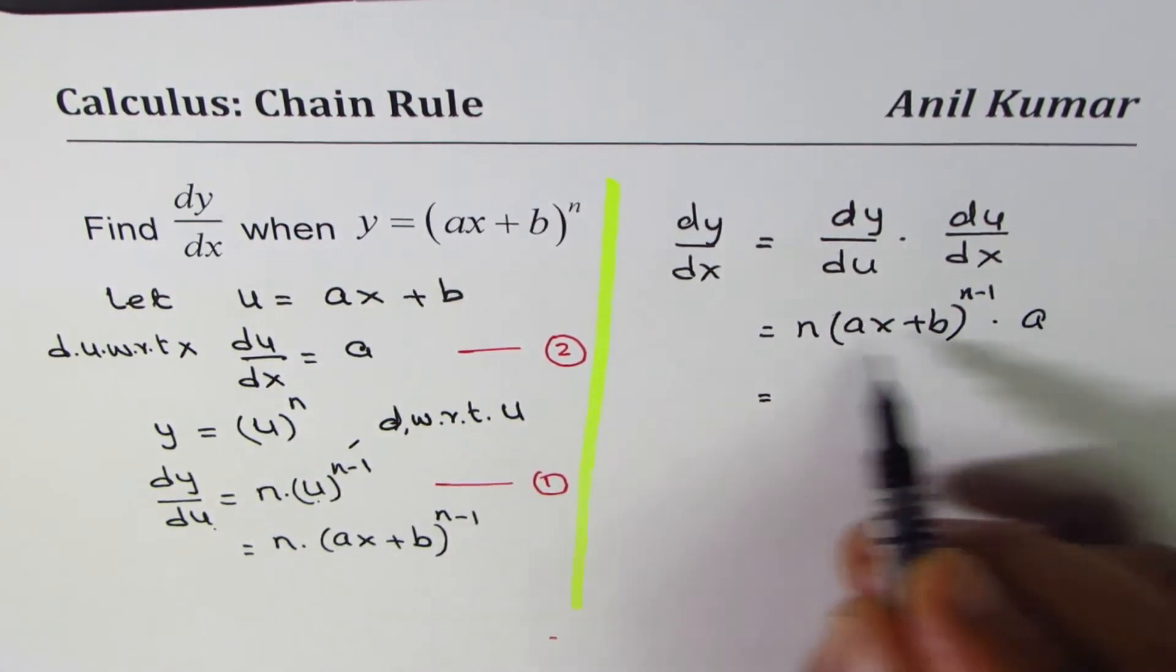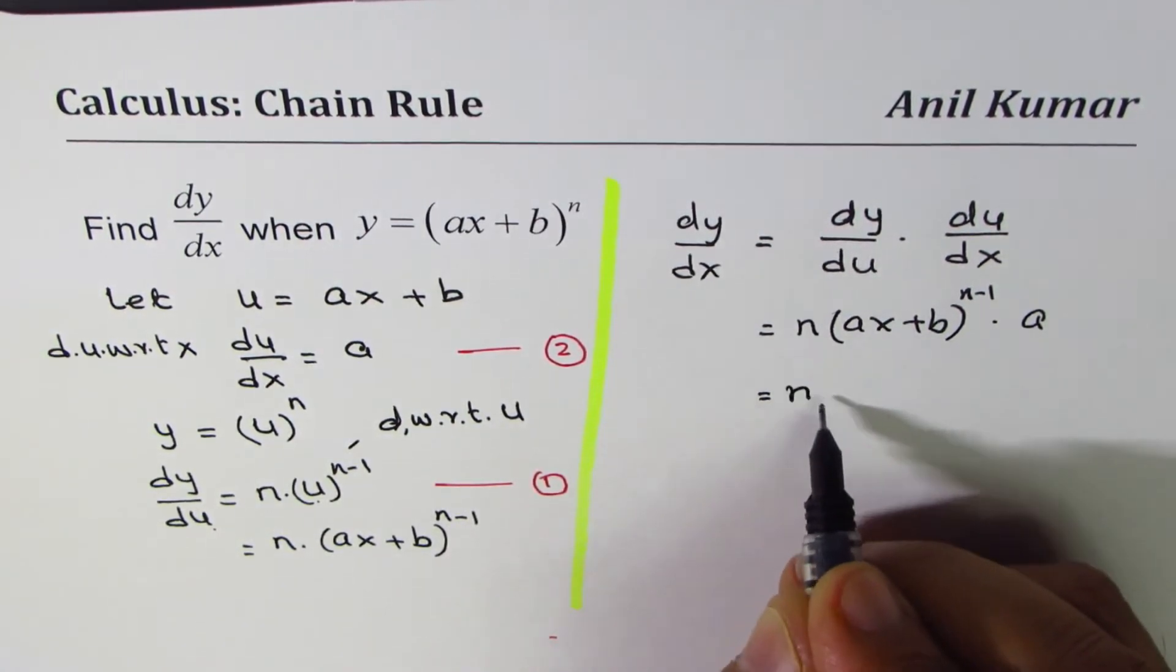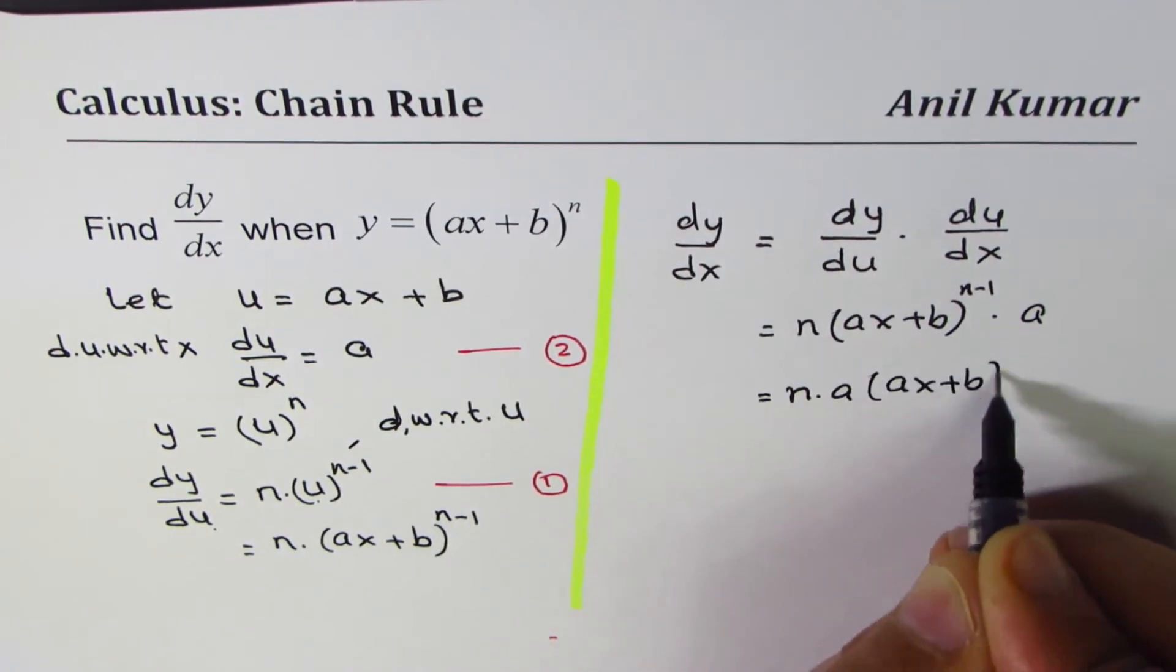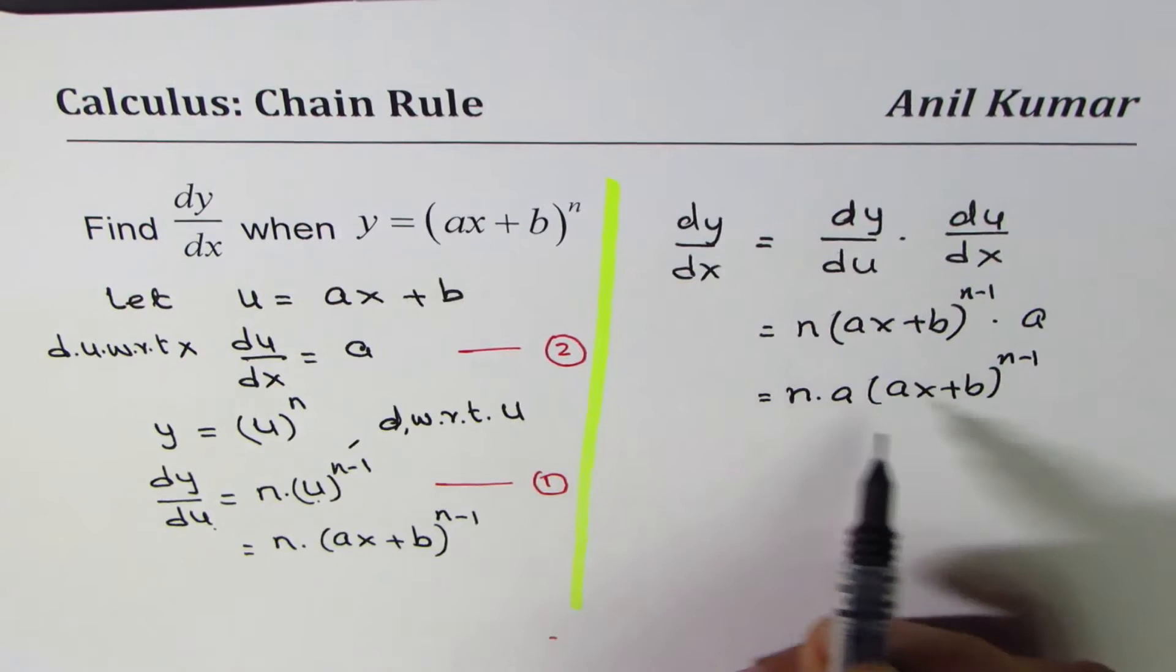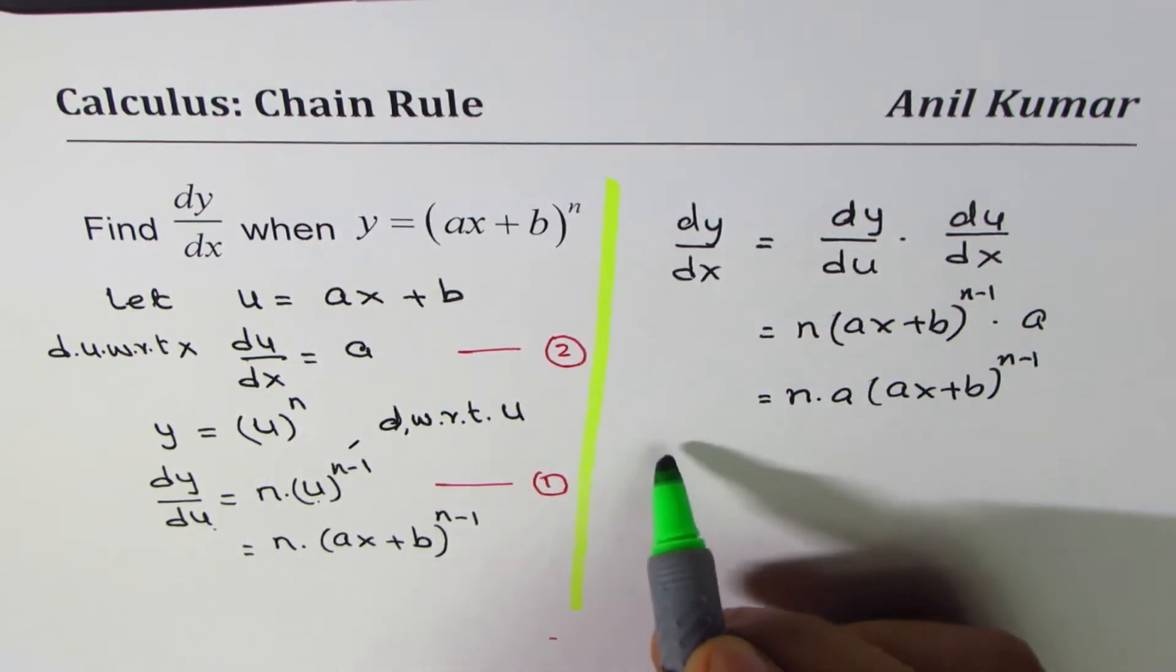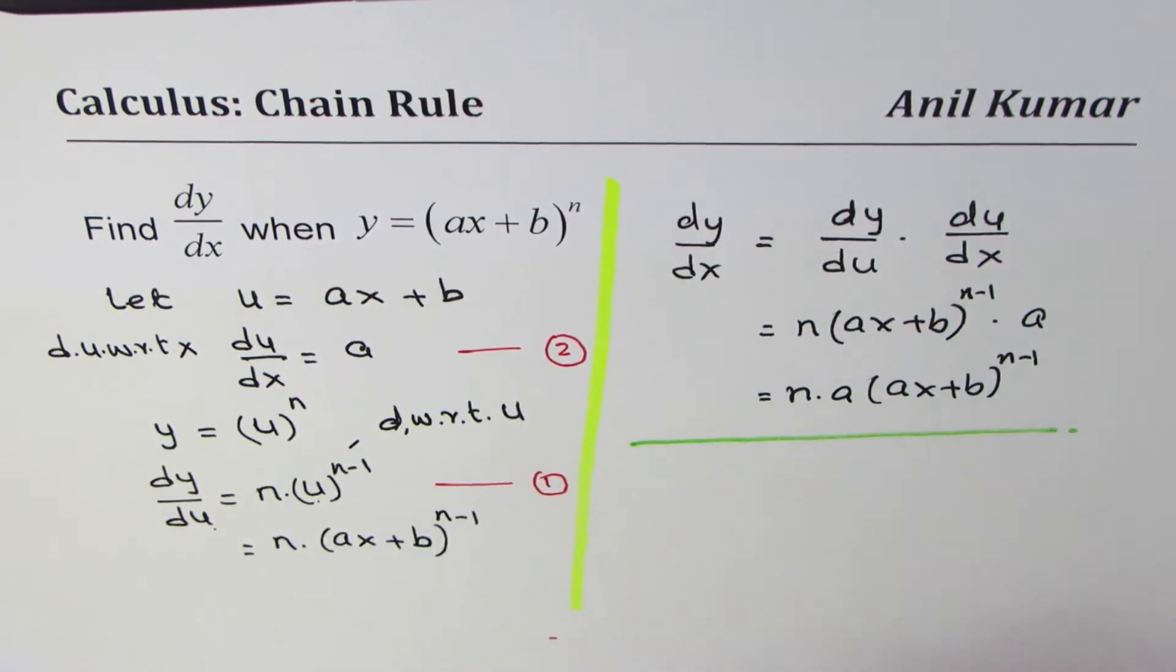Now, it's better to write the constants first. So let me write n times a, ax plus b to the power of n minus 1. So that is how you can get the derivative of the function using chain rule.